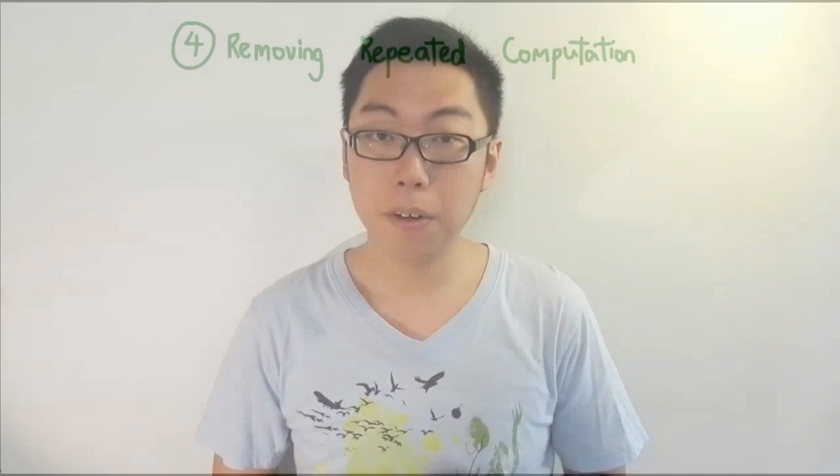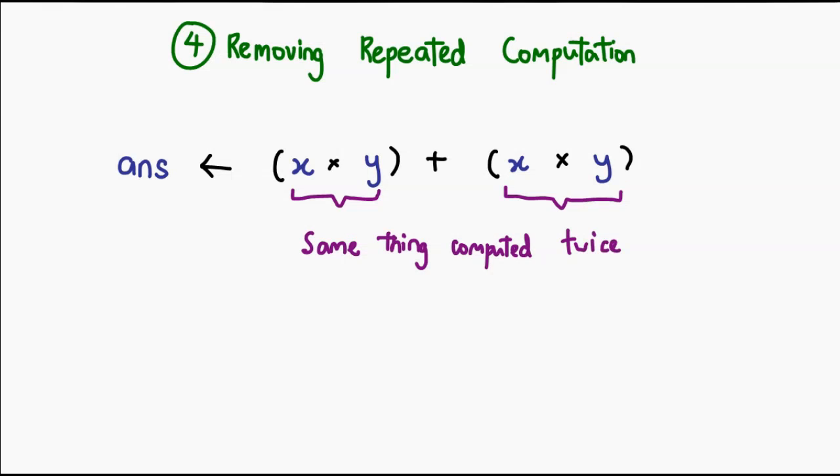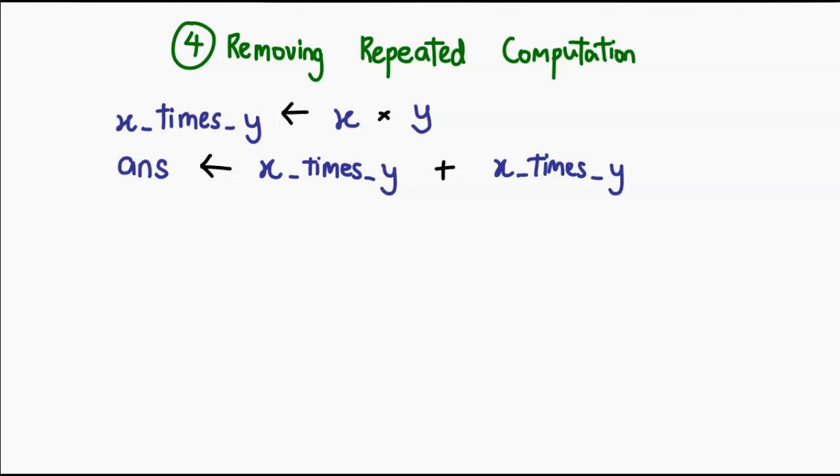Number four, removing redundant computation. And I know we've talked about redundancy before, but in this case, this would be in the form of math. For example, if we say x times y plus x times y, if we were to process this in its entirety, then we're doing the same calculation twice. Instead, you could just do the calculation once and remember the answer, and then use it twice in the subsequent calculation. That way, you only do two calculations instead of three.